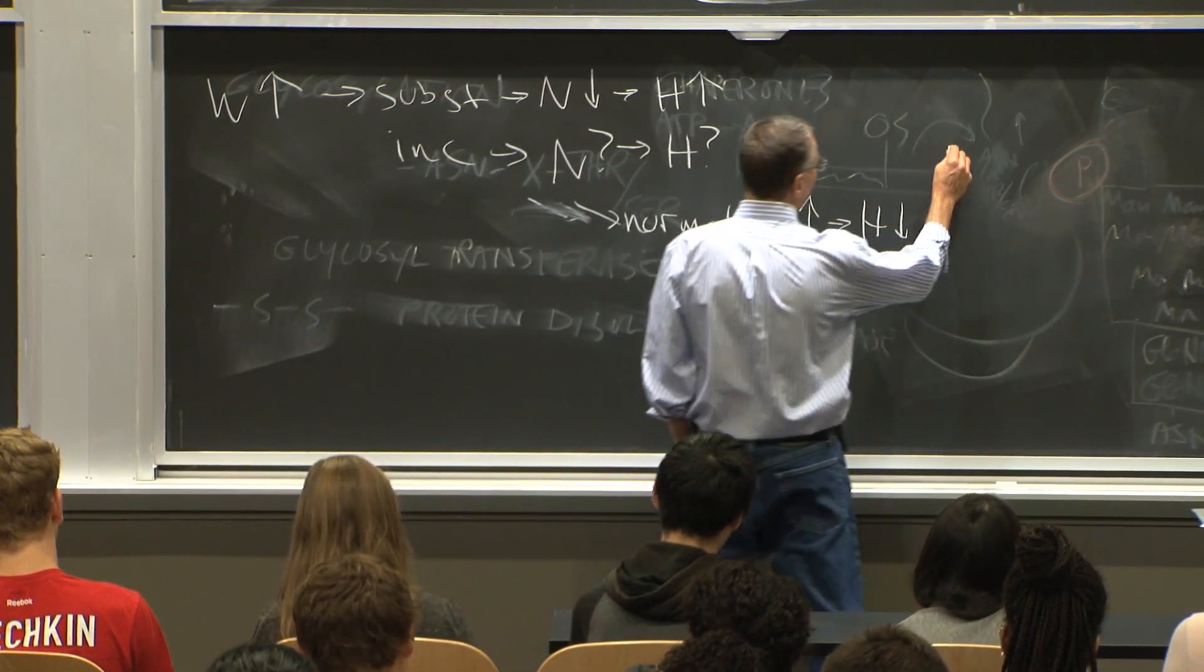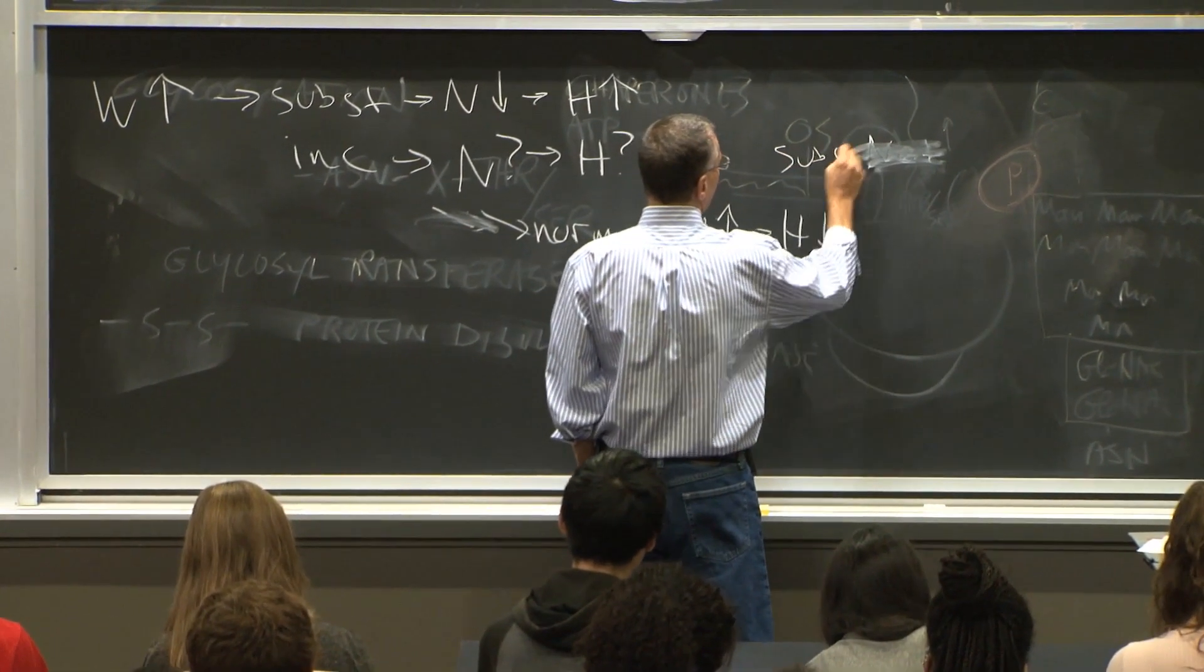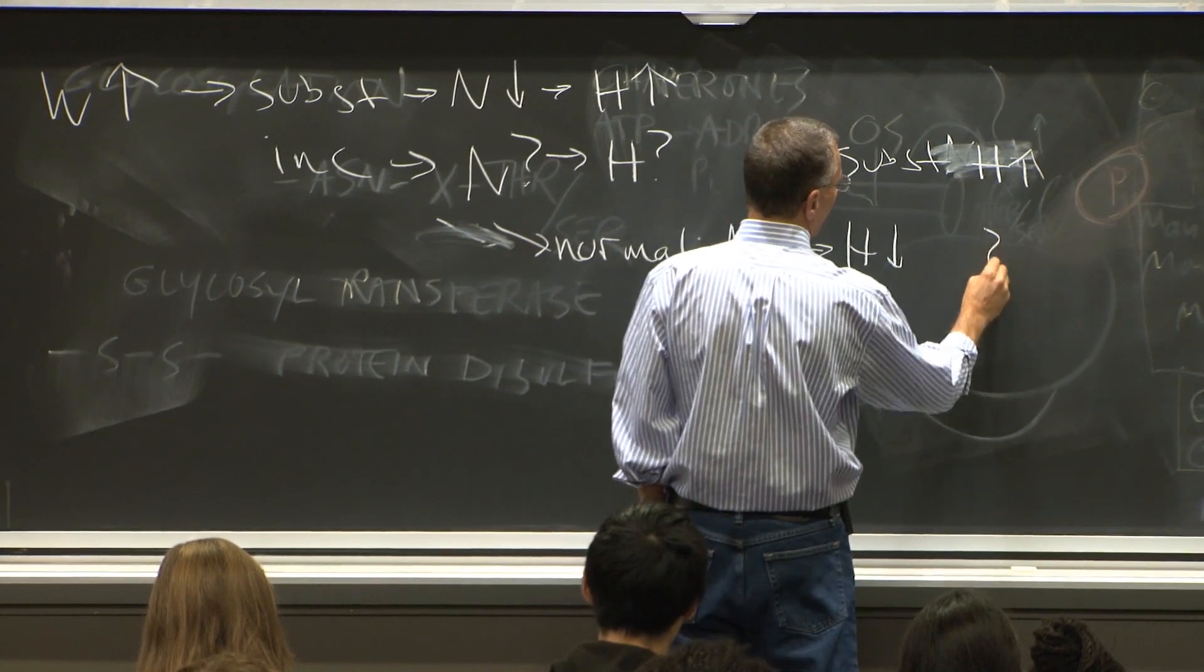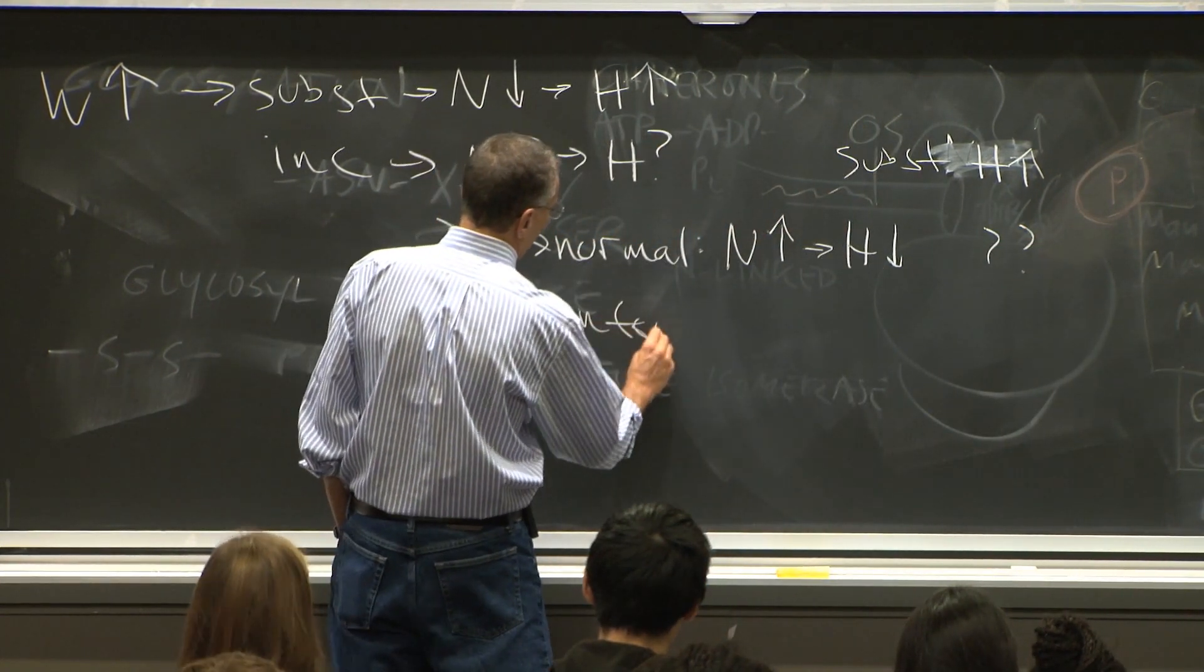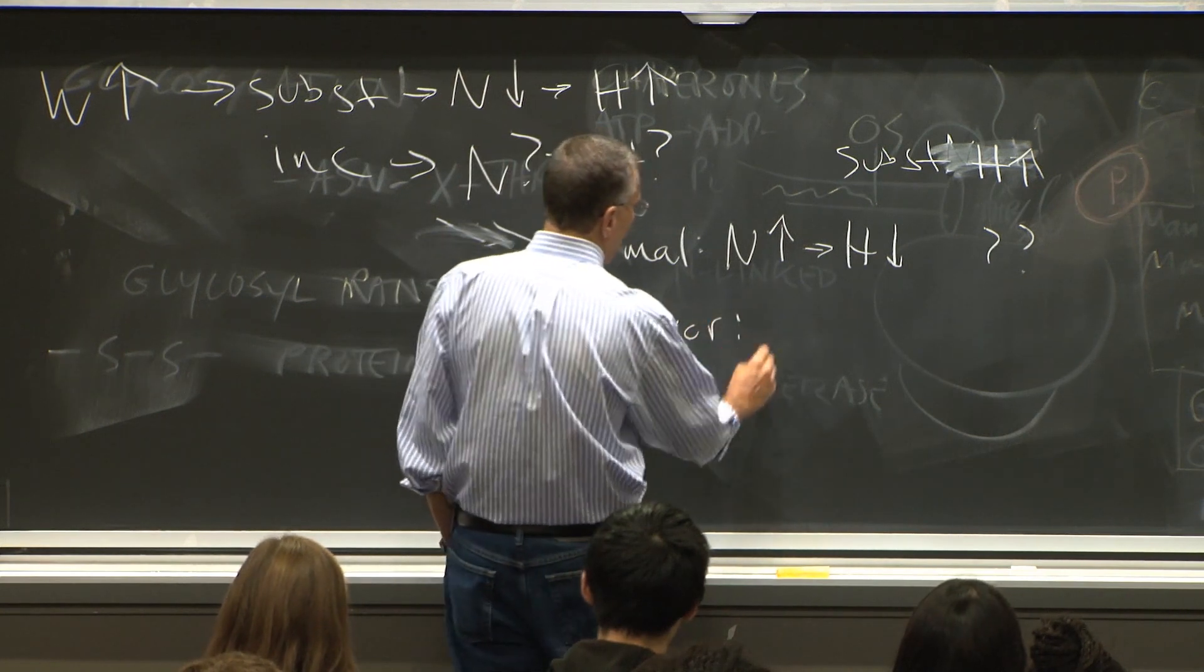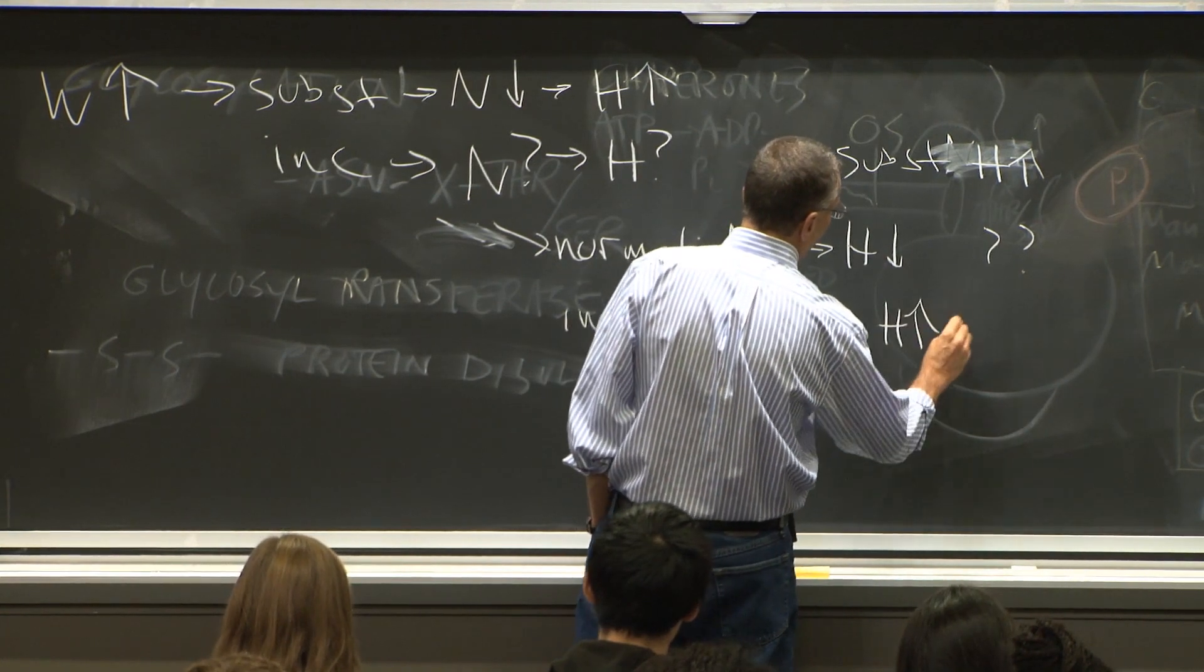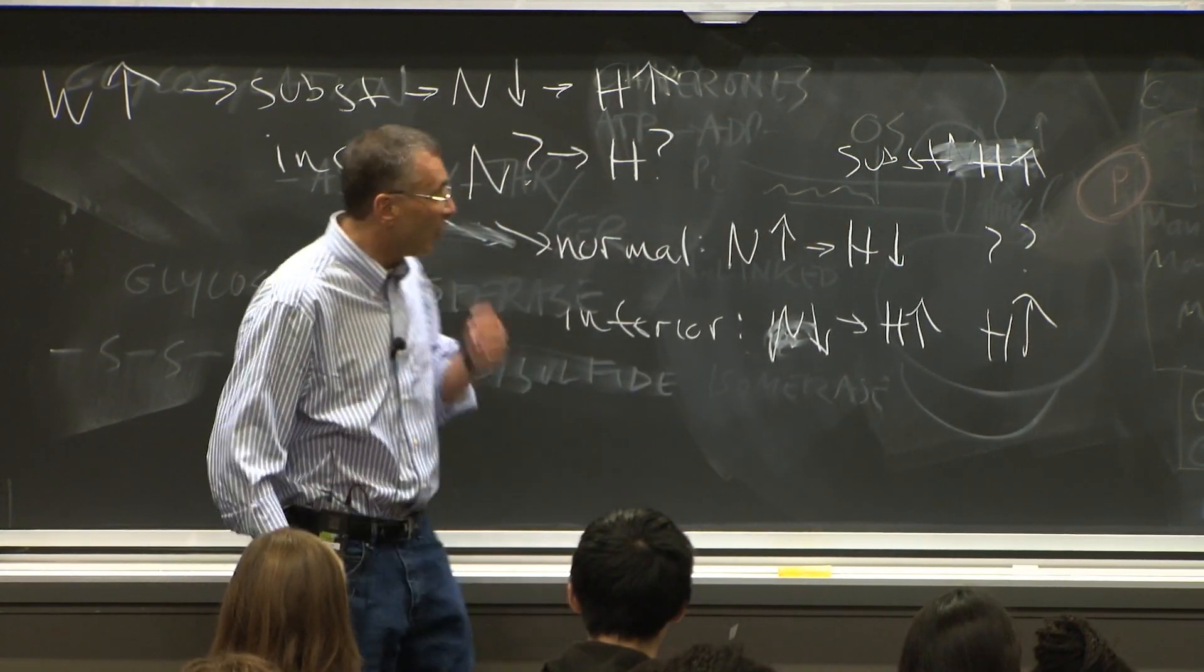So, here, the net... So, the substitution was always H goes up. So, here, the net is ambiguous. Okay? But, if it's inferior, then N is going to go down, which means H will go up, which means, clearly, H will go up from the wage change. Okay? So, let me go through it again.